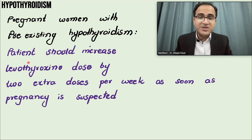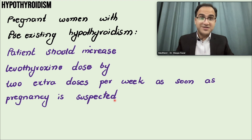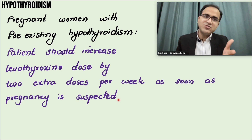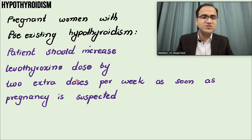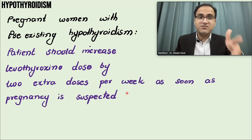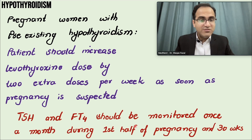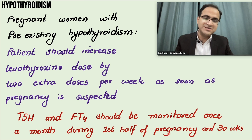As soon as pregnancy is suspected, increase the levothyroxine dose by two extra doses per week, or increase the daily dose by 25 to 30 percent. TSH and free T4 levels should be monitored once a month during the first half of pregnancy, and then again at the 30th week.